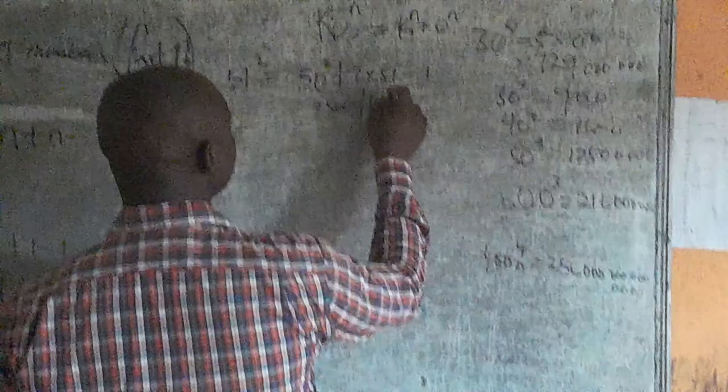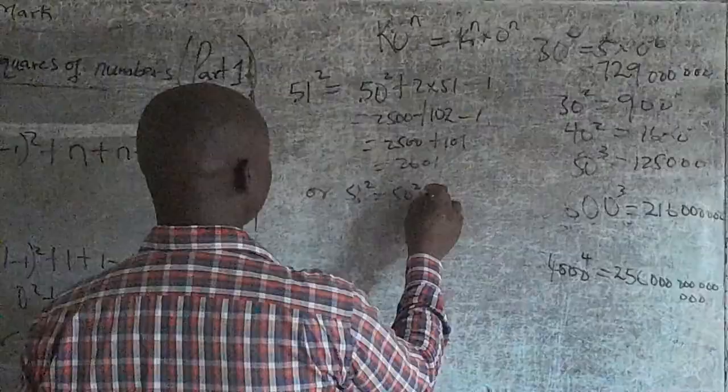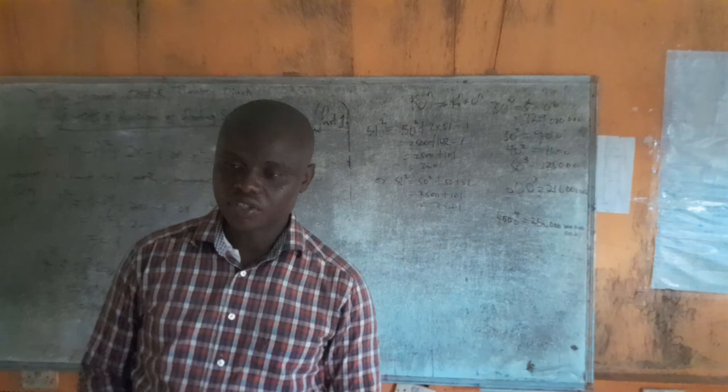Can I have a calculator? So, back to the equation, this is now 2,500 + 102 - 1, that is now 2,601. Or it's the same way, 51² is 50² + 50 + 51, that is 2,500 + 101, that is 2,601.